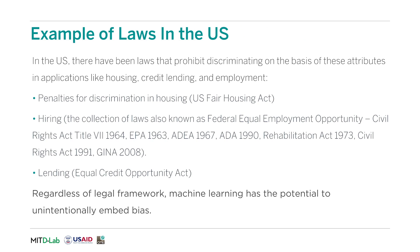In the United States, discrimination based on these protected attributes in housing, lending, and employment is illegal. Some of the laws are listed here for your reference. However, regardless of the legal framework, machine learning still has the potential to unintentionally embed bias. In this lecture, we'll look at a few examples. The next lecture will explore some approaches to mitigate unintentional bias.